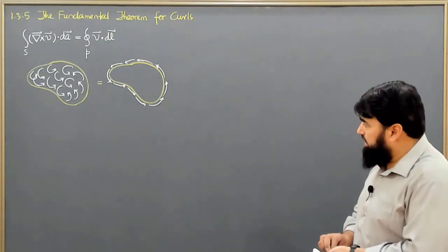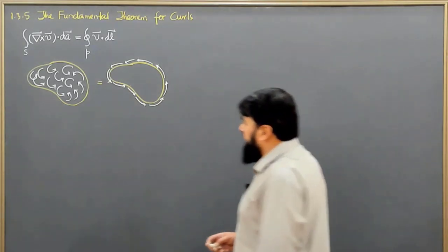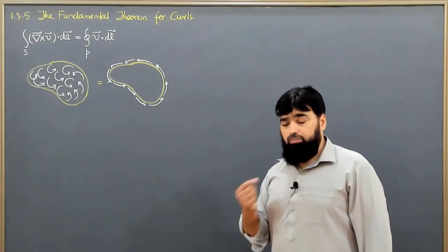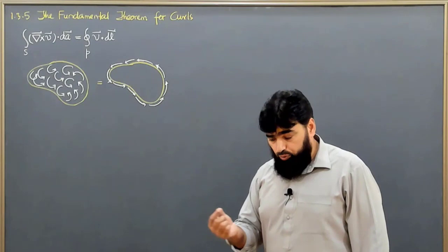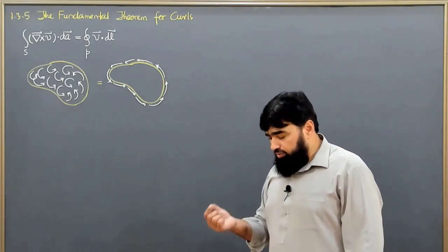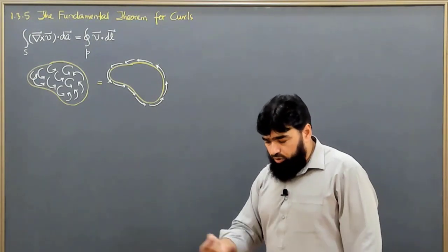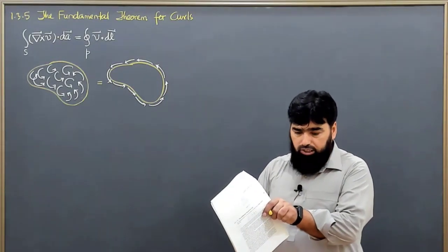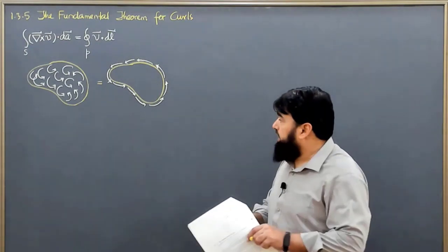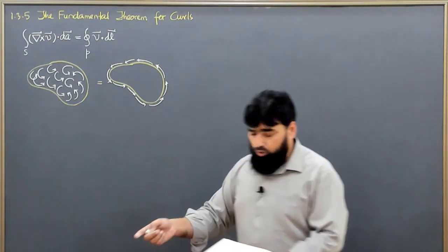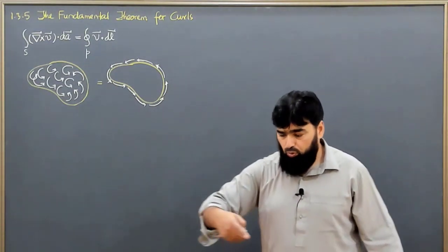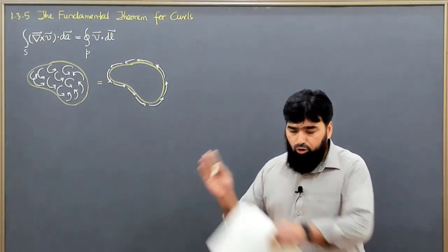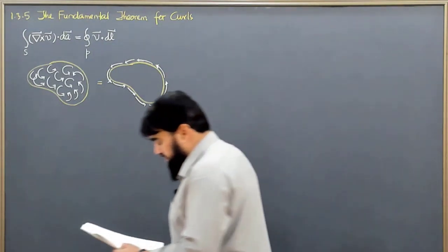So the flux of all the curls will be found if we just look at the boundary of it. Another example: let's say we are having an incompressible fluid like water and we consider the whirlpool of the water. It is whirling, going around, curling. If I take a cross-sectional area in front of it, how much is the flux of that curling will be given by the line integral on the boundary of that whirlpool — it will give me the flux of that curling on the surface.